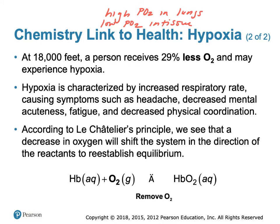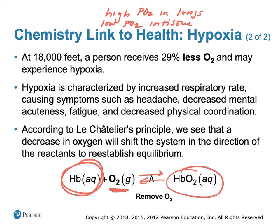Hypoxia is characterized by increased respiratory rate with symptoms such as headache, decreased mental acuteness, fatigue, and decreased physical coordination. When going to high altitudes, you need to acclimate before strenuous physical activity. As you acclimate, your body produces more red blood cells and more hemoglobin. As a result of having more hemoglobin, we can pick up more oxygen in the lungs and make more oxyhemoglobin that can then deliver oxygen to the tissues — again, we are shifting that equilibrium.